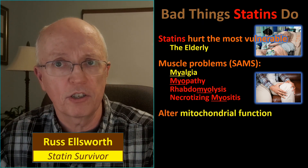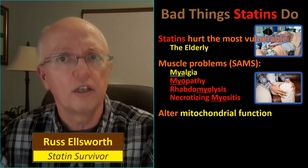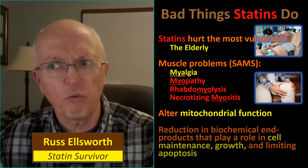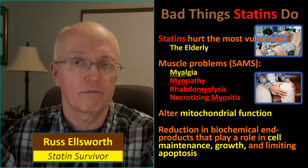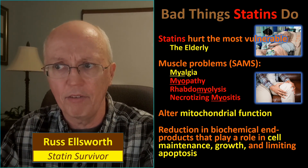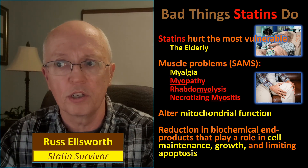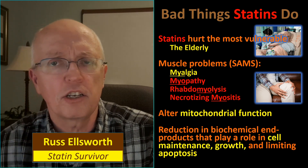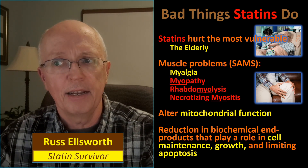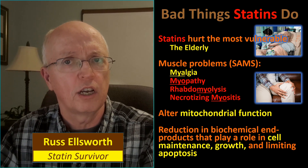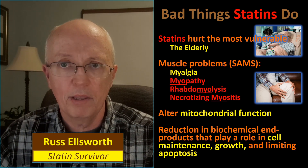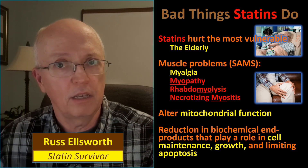Statins also alter mitochondrial function. The mitochondria depend on CoQ10, which statins are preventing from being produced within your body. There's also a reduction in biochemical products — not just CoQ10 — that play a role in cell maintenance, growth, and limiting apoptosis. Apoptosis is the natural cell death that occurs in all humans — it's a controlled process within our bodies. Statins reduce the products that help control that process, giving it free reign. Since it's part of normal aging and we're taking the controls off, maybe that's why statins seem to mimic the conditions of aging.